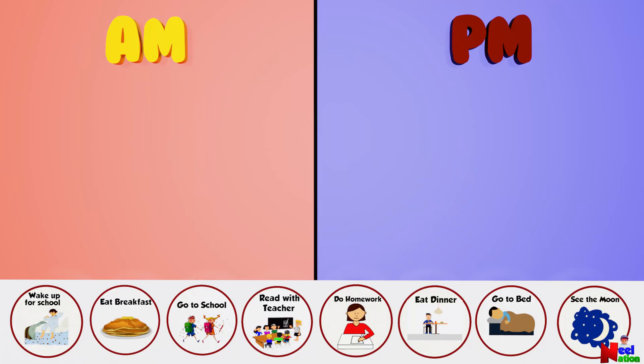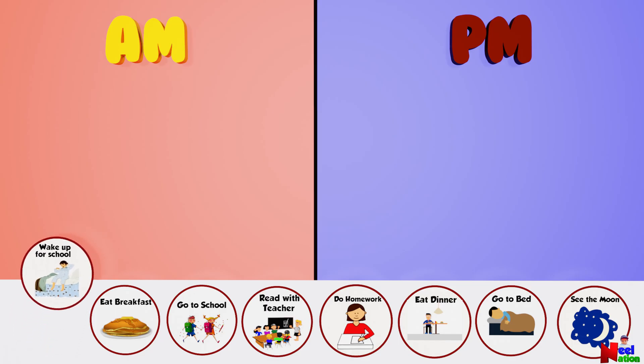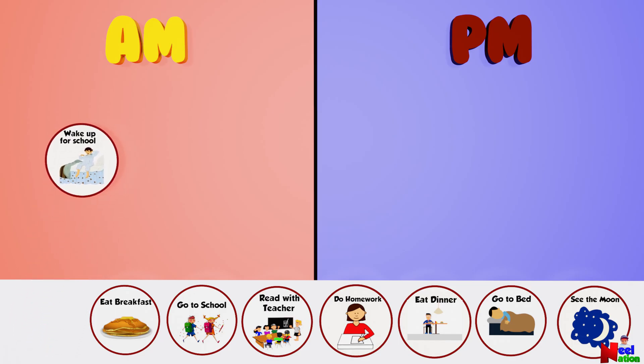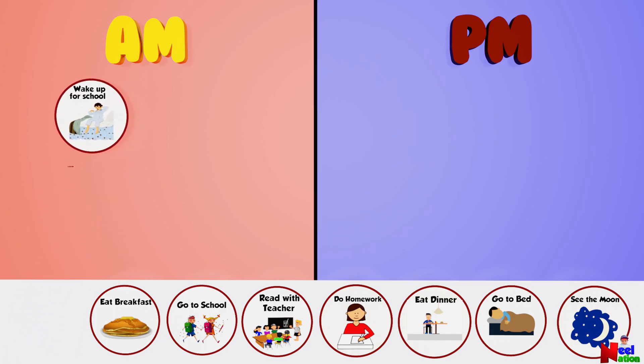You do lots of activities in a day. Let's sort them by AM and PM. When do you wake up for school? In the AM — at 6 AM.